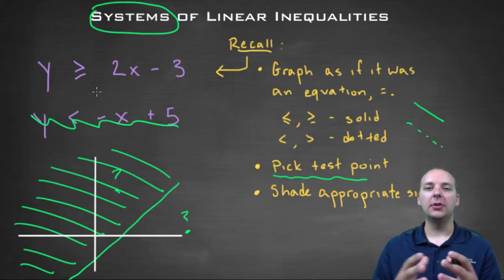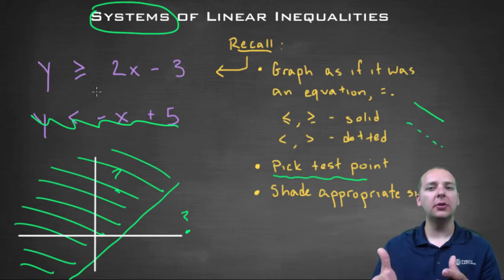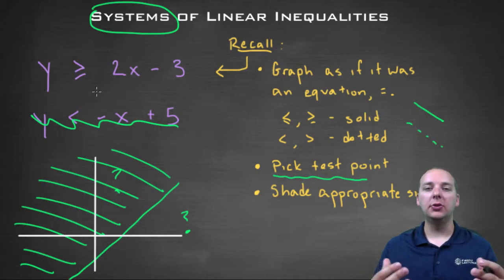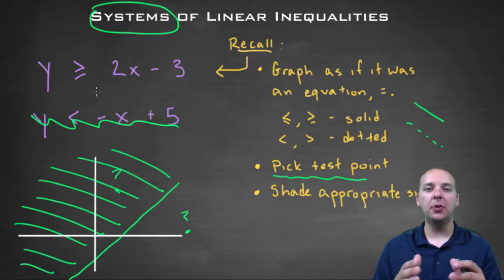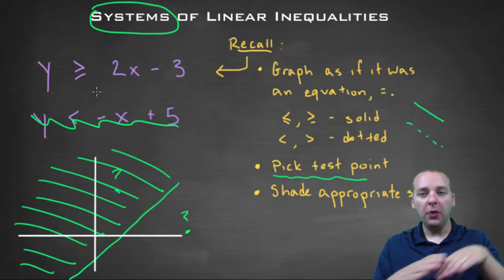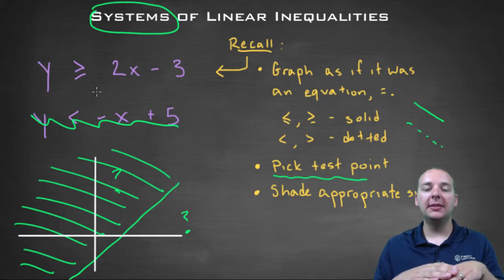Now let's think about what would be the solution to the entire system. What does it mean to be a solution to a system? That would be an ordered pair that makes all of the inequalities true at the same time. So what you're going to be looking at for your final answer is any overlapping regions, because in those overlapping shaded areas, those are places that are solutions for all of the inequalities.